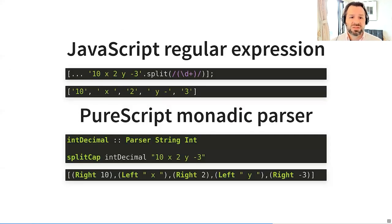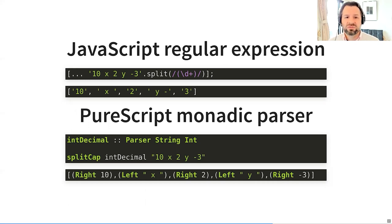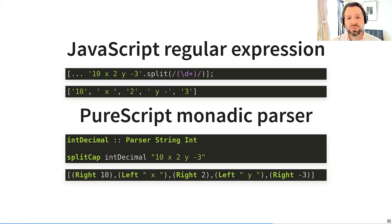We often use regular expressions to scan a string and capture all the patterns we find. Here, we want to find all of the integers in the string '10x2y-3' and split them out. We've done this with both a regular expression and a monadic parser. The monadic parser for an integer doesn't just match a string pattern and return a string — it actually converts the string to an integer and returns the integer. We use the int_decimal parser included in the PureScript parsing library. The split_cap function runs this parser and produces a fully typed data structure describing everything about the structure of the input string with respect to the integer patterns.